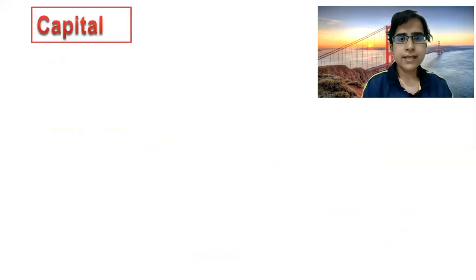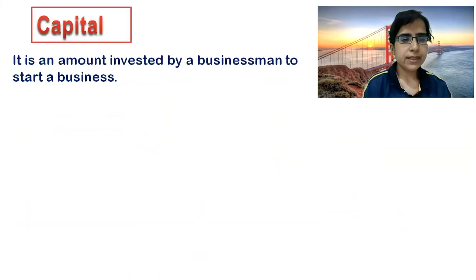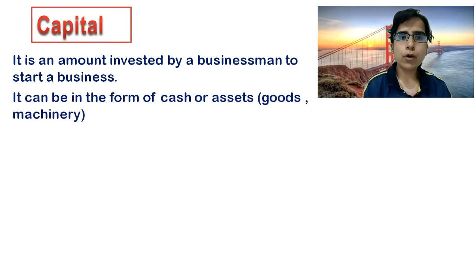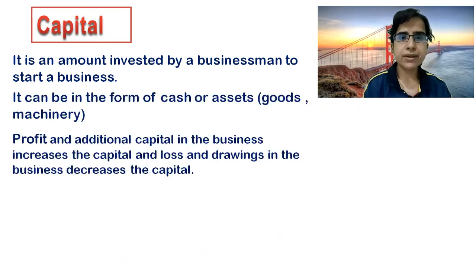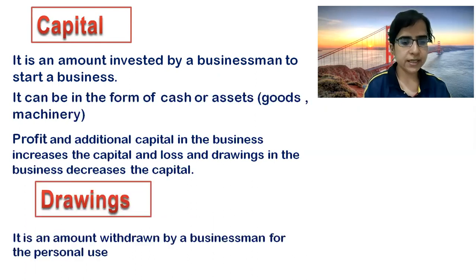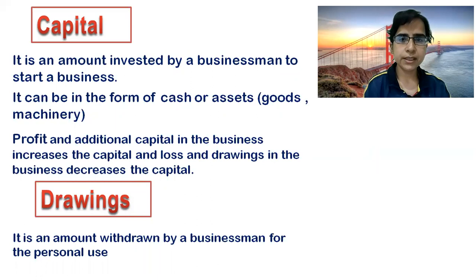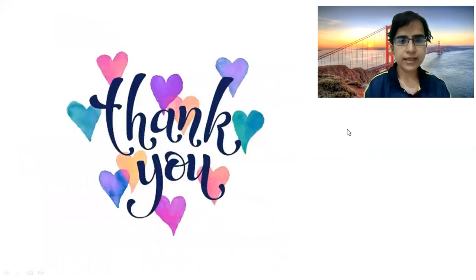Now let's summarize what we have learned. Capital is an amount invested by a businessman to start a business. It can be in the form of cash or assets such as machinery, building, furniture, or goods. Profit and additional capital increase the capital, while loss and drawings decrease it. Drawings is an amount withdrawn by the proprietor for personal use. Thank you friends.